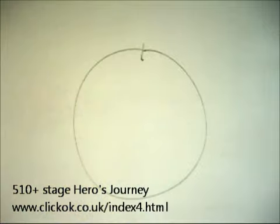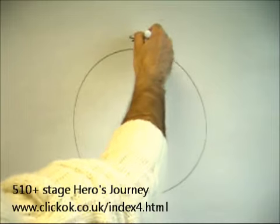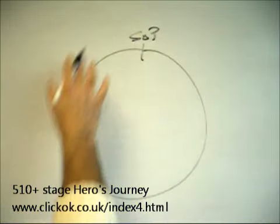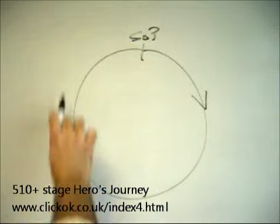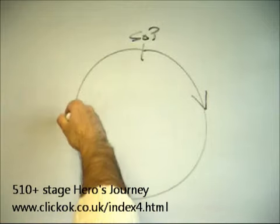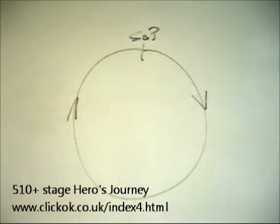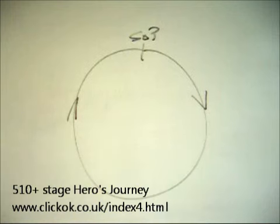This is what we call the classic timeline. The classic beginning is a state of perfection, and the classic ending is a state of perfection. Essentially, what happens is a state of perfection is lost, and then the process to return to a state of perfection is undergone. That, in essence, is story.